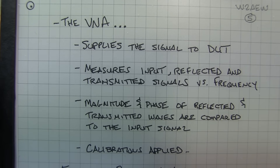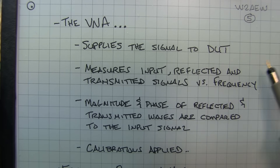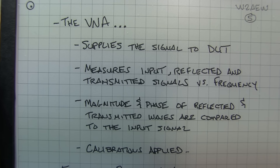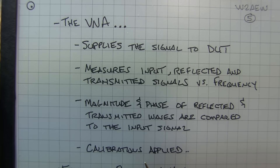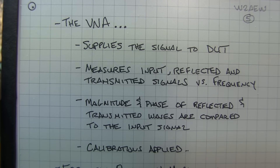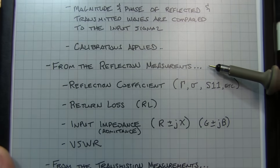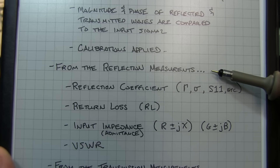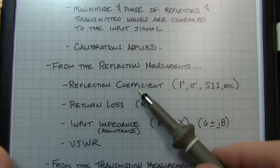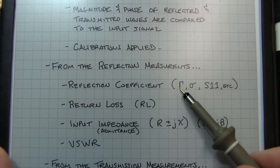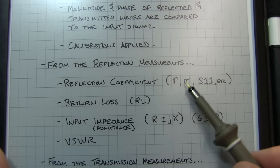One thing that's very important with VNAs is calibration, because with the directional couplers and the different connections that have to be made, there are many corrections that have to be applied to extract out the effects of the couplers and things like that. From the reflection measurements, there are several parameters typically computed and plotted on a VNA. One is the reflection coefficient, or gamma — it's a complex value. The magnitude of that is also called rho. When expressed as an S-parameter, it's typically S11 when referred to the input of a device, or S22 when referred to the output reflection.